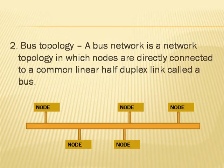Bus topology: a network topology in which each node is directly connected to a common linear half-duplex link called a bus. Half-duplex link means only one-way transmission is possible at a time.